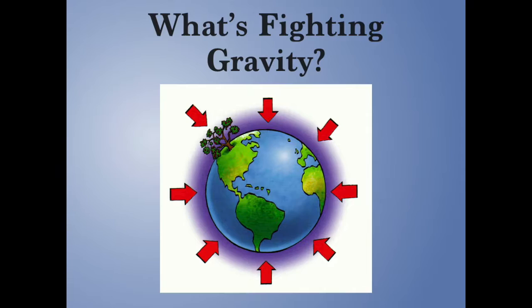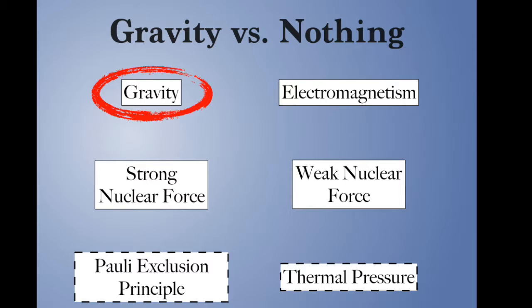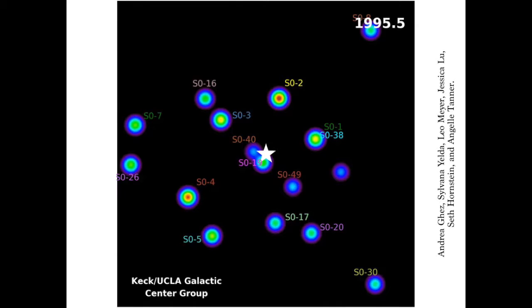If the thing fighting gravity is nothing, you get a black hole — that's where gravity has totally won. Why do we think black holes exist? We're in the middle of the Milky Way galaxy. We can point our telescopes toward the center, where there's a bright source of radio waves but nothing visible with an optical telescope. We can look very closely at the center and watch what happens to stars there.